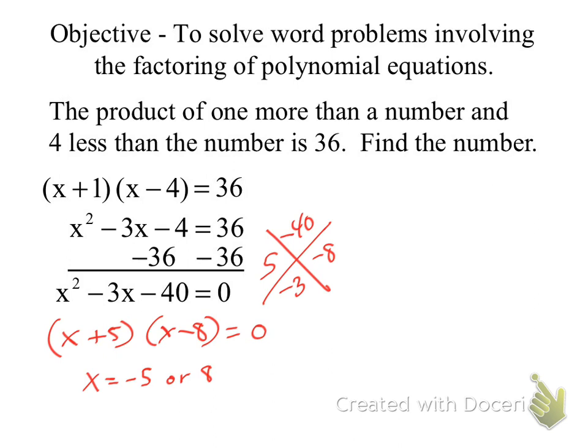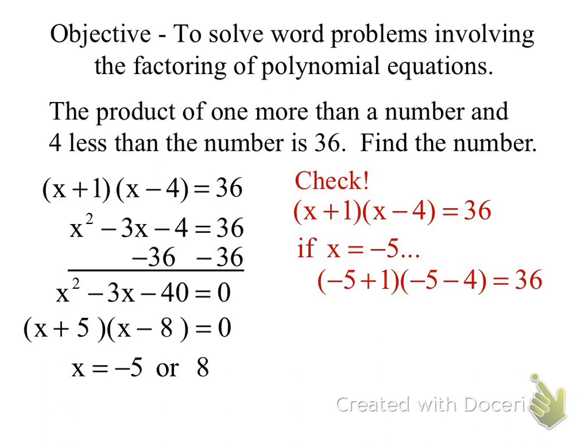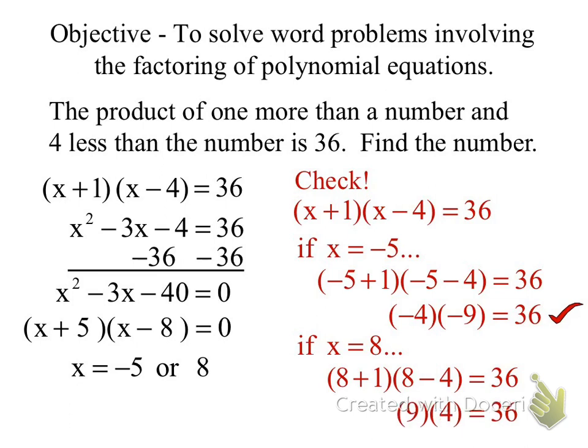So my solutions are X equals negative 5 or 8. So it says find the number. So now we can check that. Let's first try with our negative 5. Substitute it in. Negative 5 plus 1 is negative 4. Negative 5 minus 4 is negative 9. Negative 9, negative 4 makes positive 36. Then let's check our 8, 9 times 4 is 36. They both work. So our solutions are negative 5 or 8.